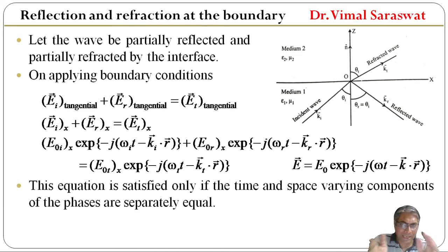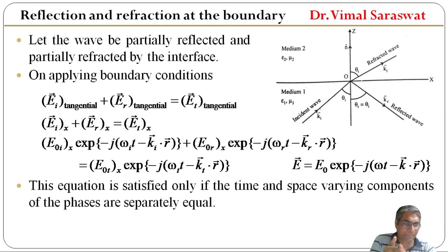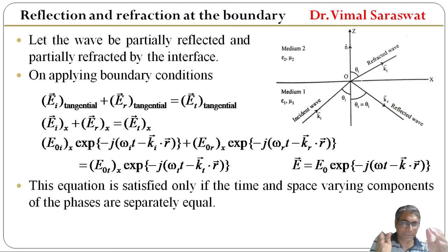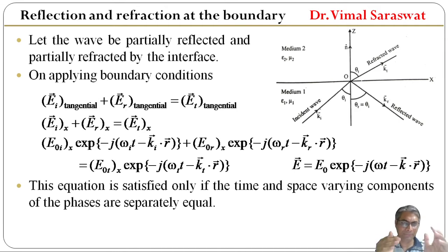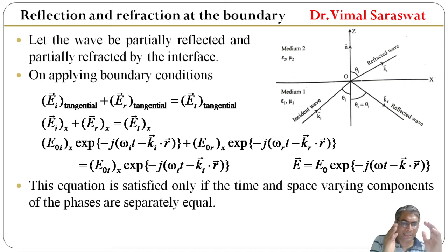This equation is satisfied only if the time-varying components and space-varying components (samay-adharit gharak evam aakash-adharit gharak) are separately equal. So equating the time-varying components gives us ω_i·t = ω_r·t = ω_t·t.